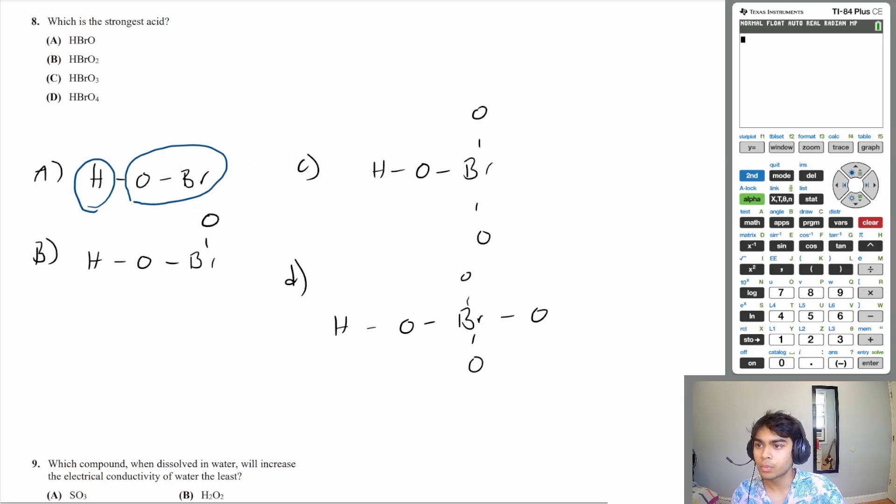So which compound here is going to be able to let go of its H? Which one has the highest dipole moment? Well, it's going to be the one with the most amount of oxygens. It's going to be D over here. So if you get rid of this entire section, and you liberate the H, this is going to be extremely electronegative. So it can handle that negative charge very well. Therefore, D is going to be the strongest acid.